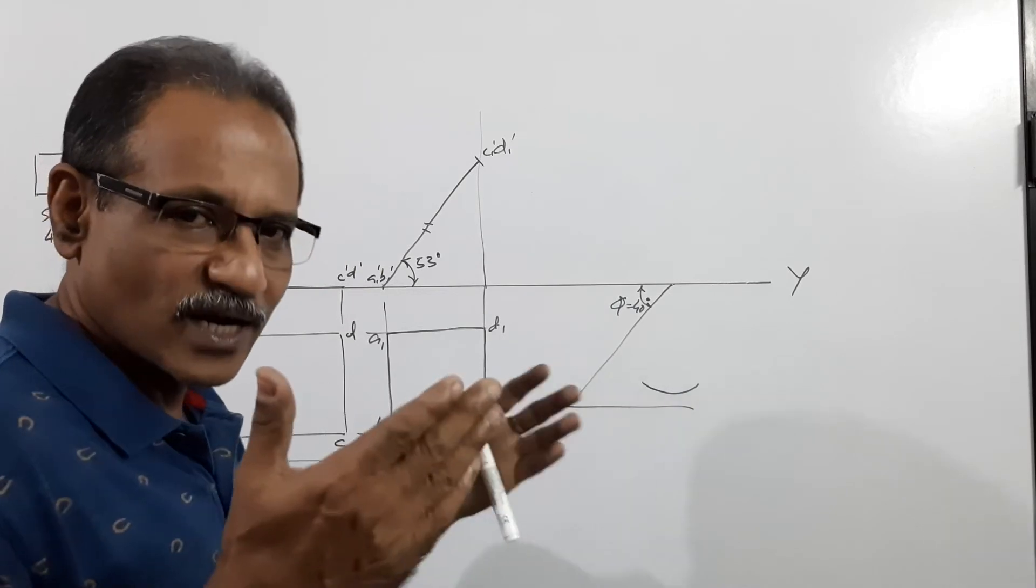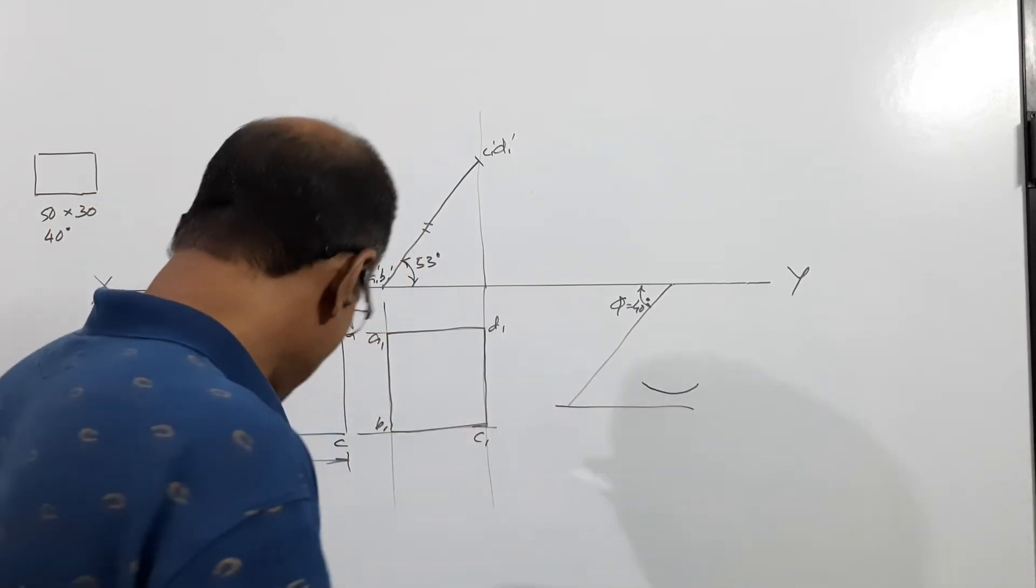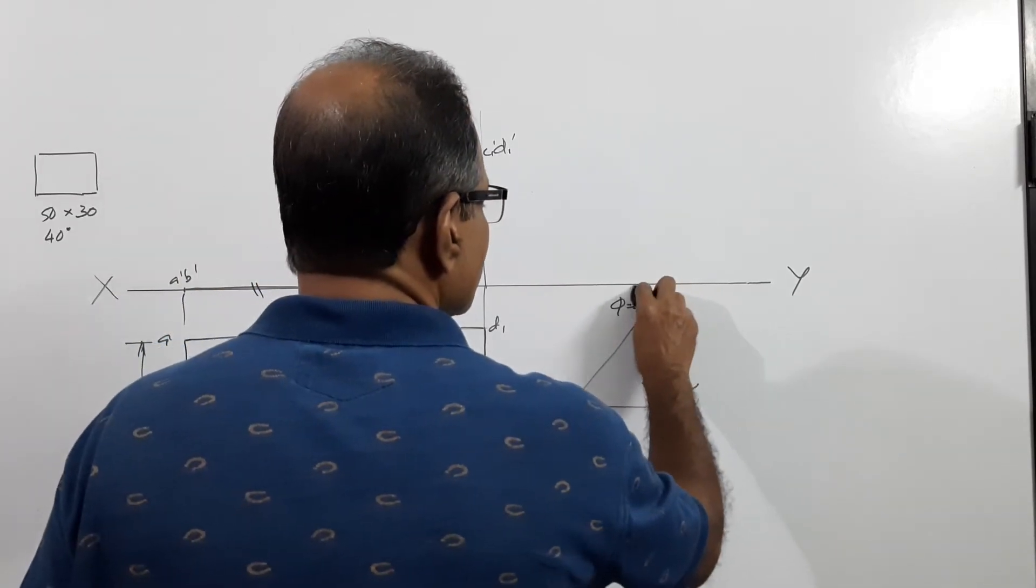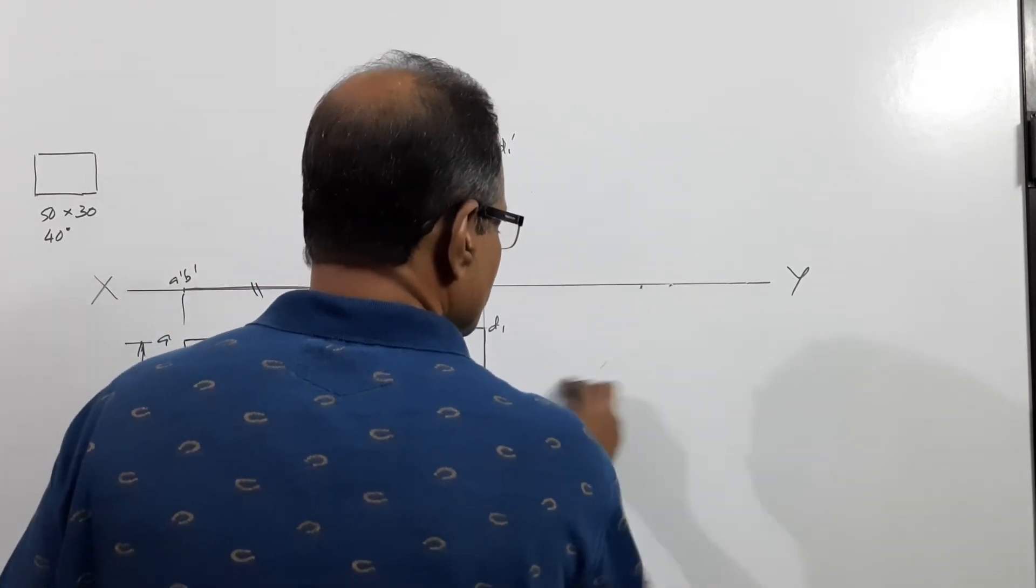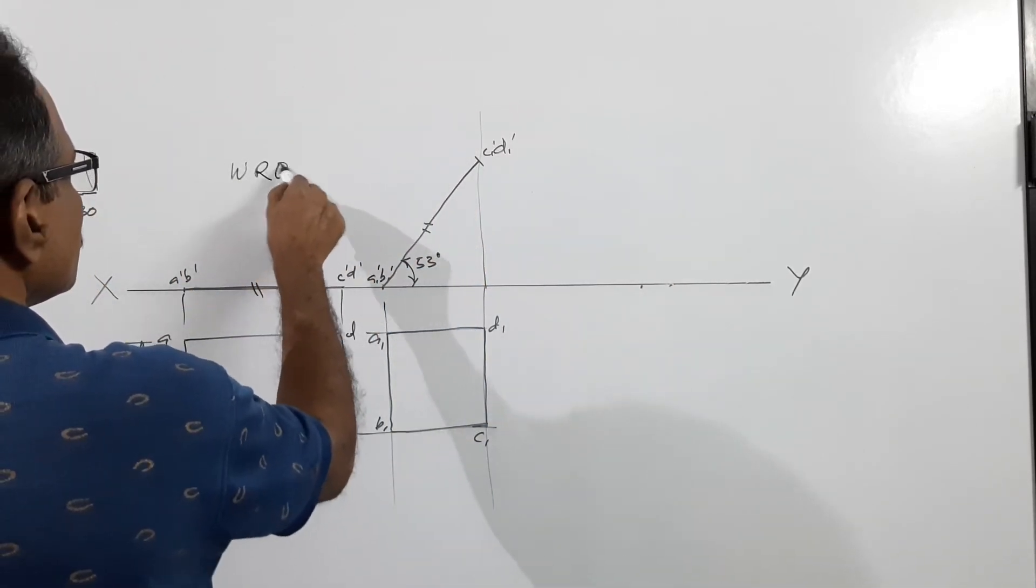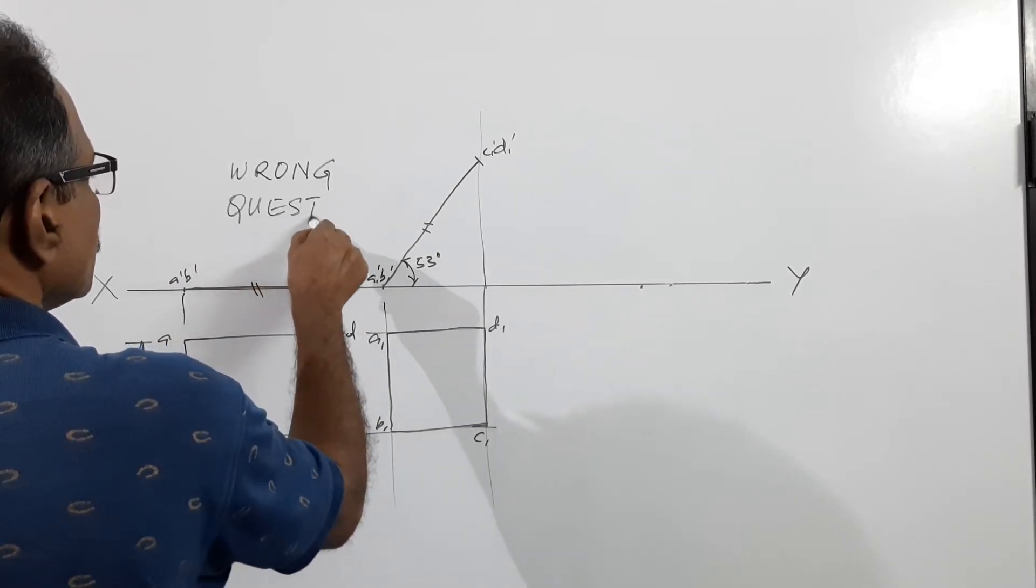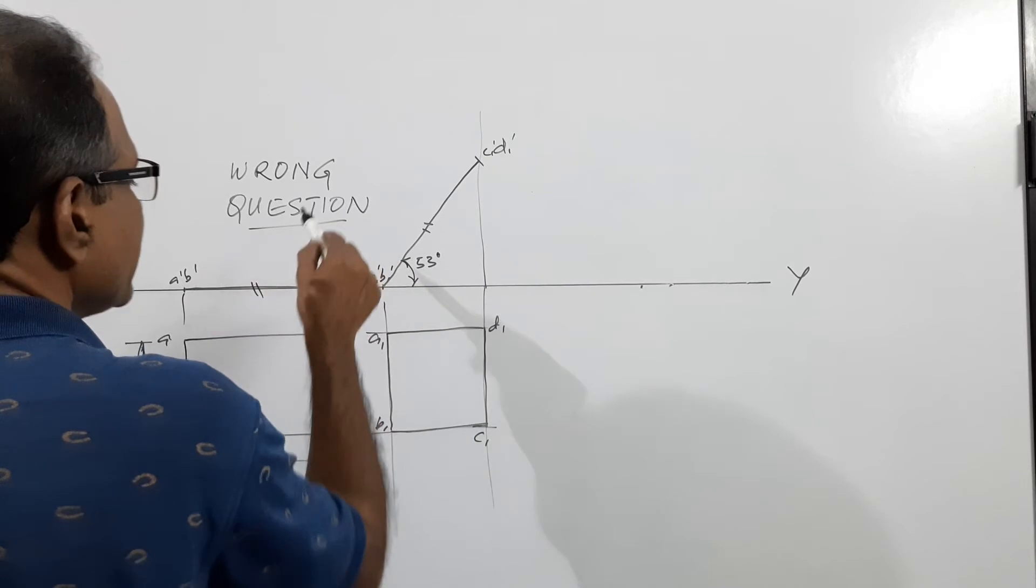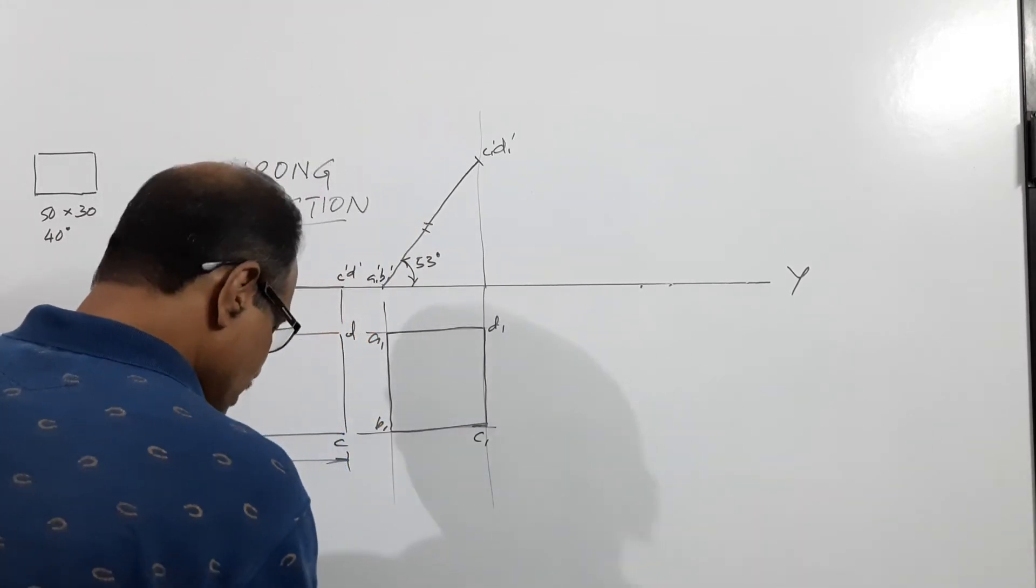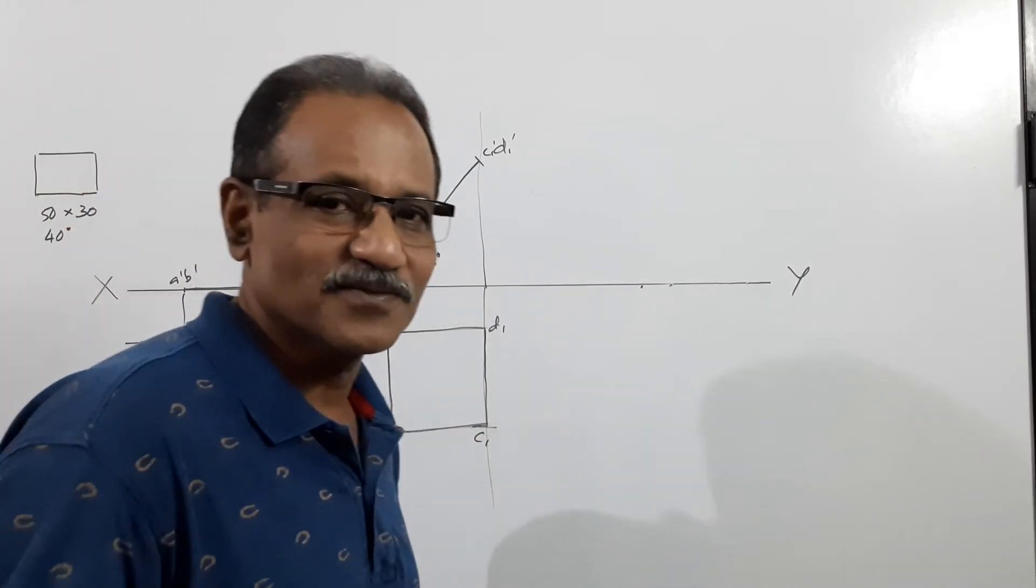Now how can we solve this? The question as it is cannot be drawn. So what we can do is for our learning purpose, for our learning purpose, I am making phi 30 degrees. Question is wrong.